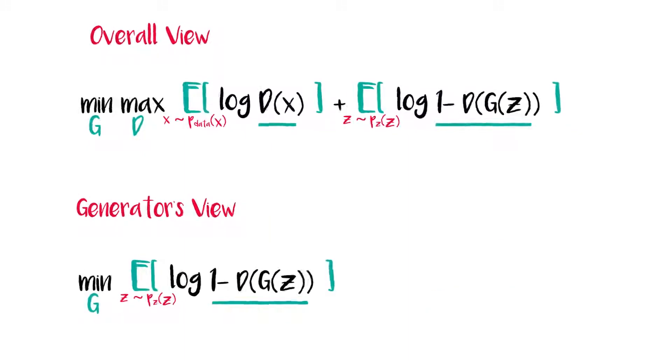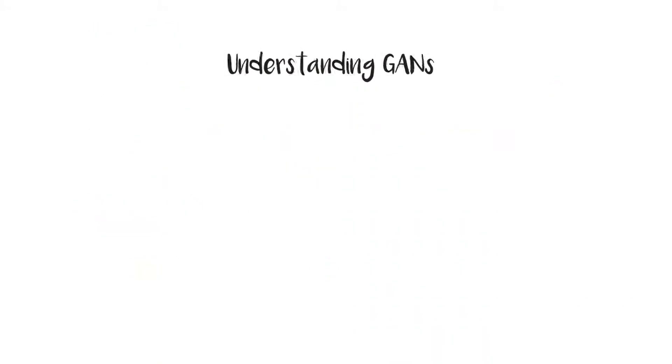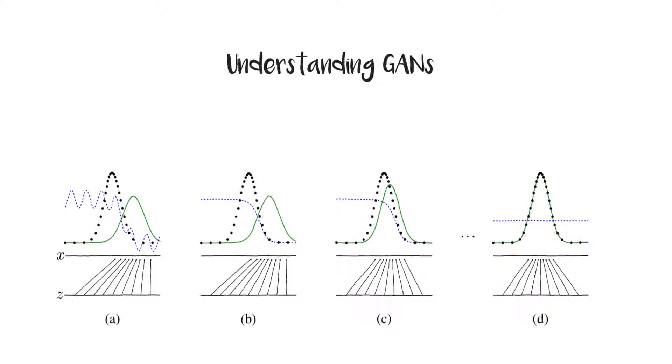On the contrary, the generator has a different view. It's trying to make D(G(z)) inch closer to 1 while the discriminator tries to do the opposite. Getting back to the paper, we have this figure which gives a nice summary of the math intuition behind GANs.